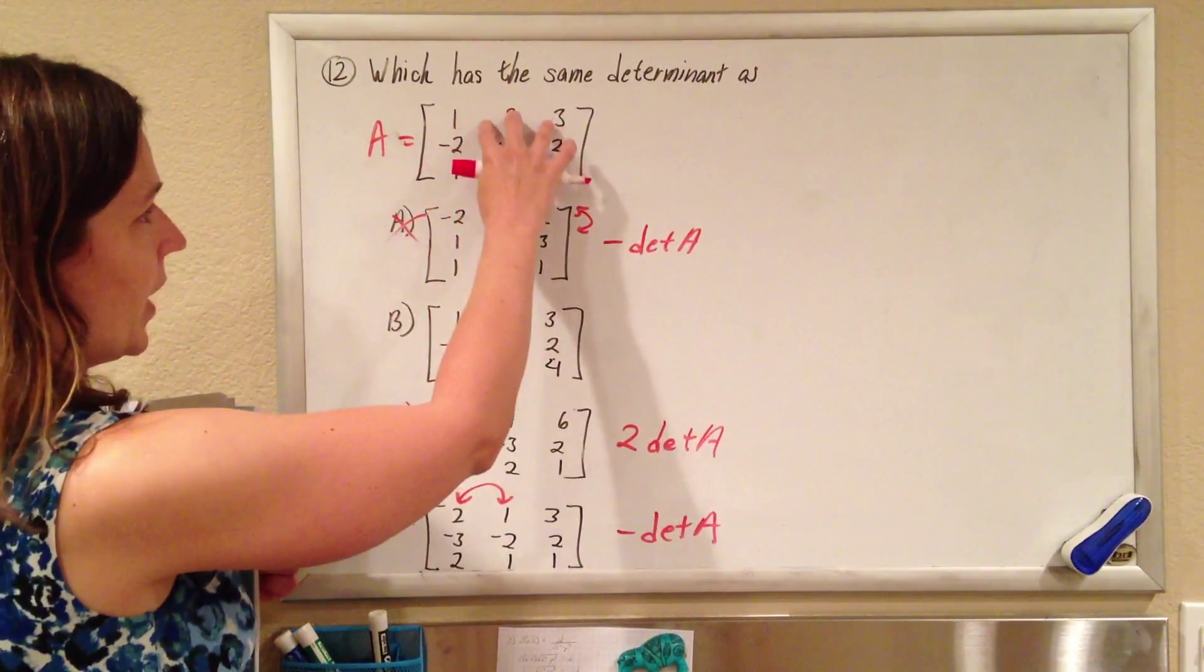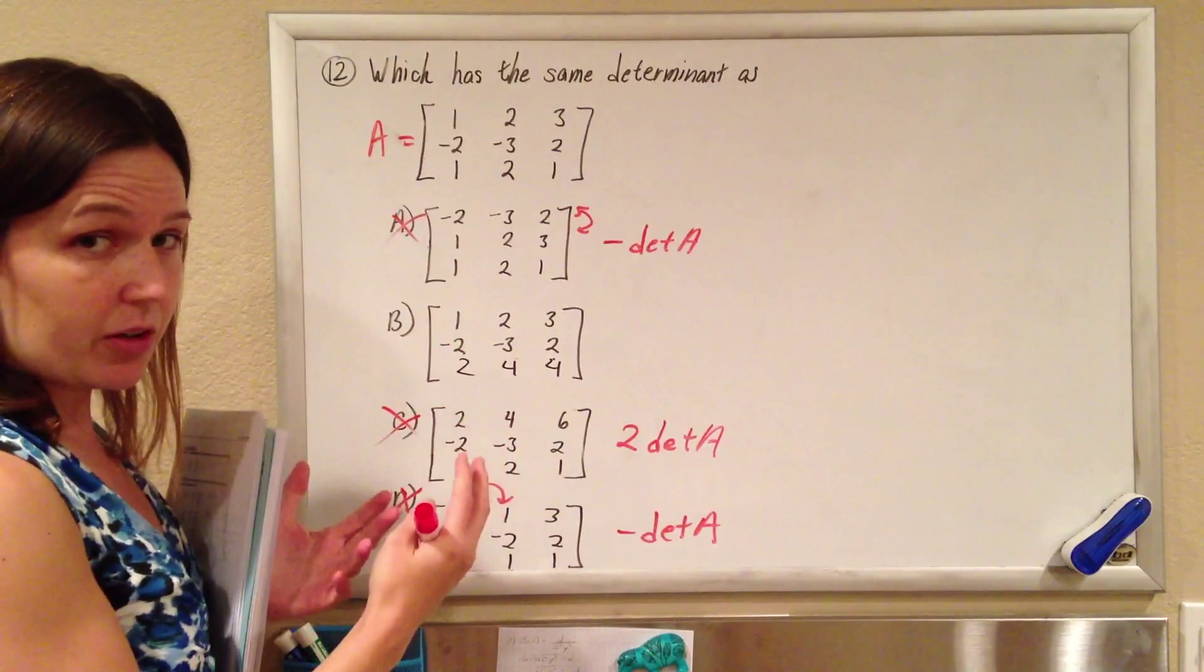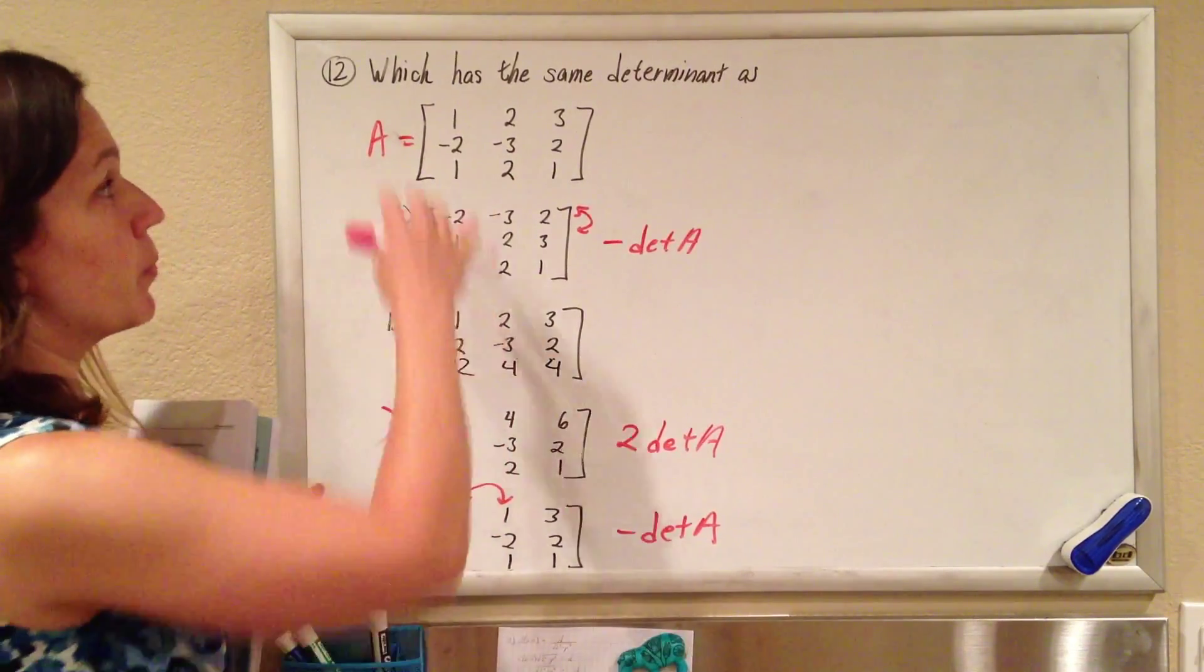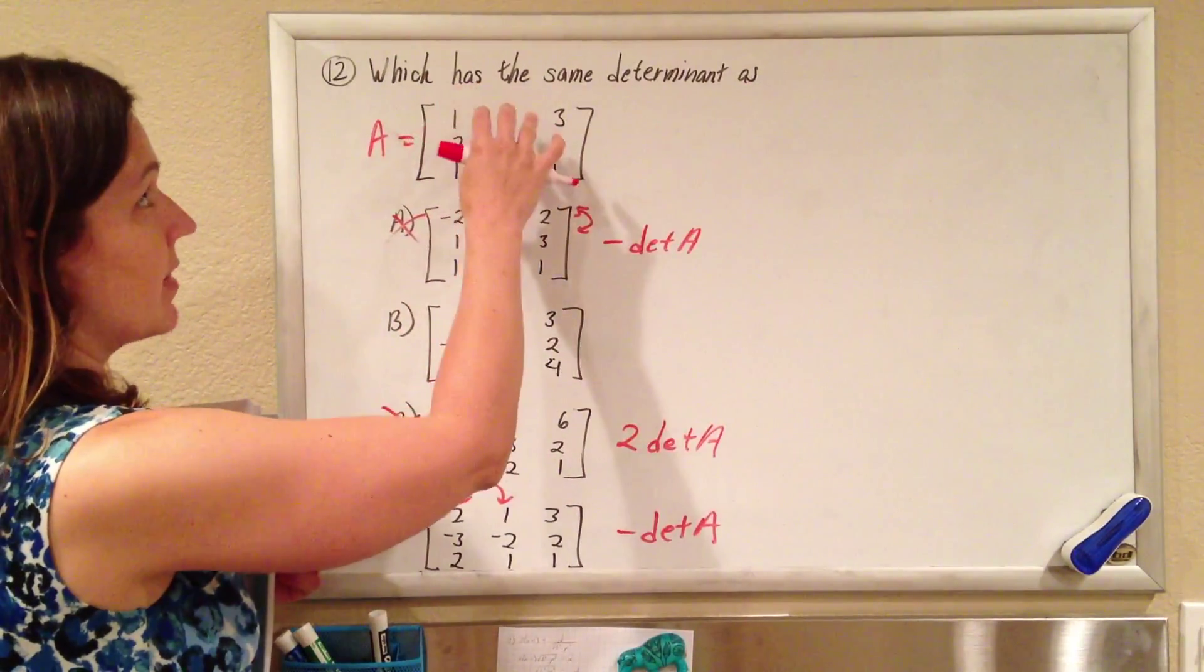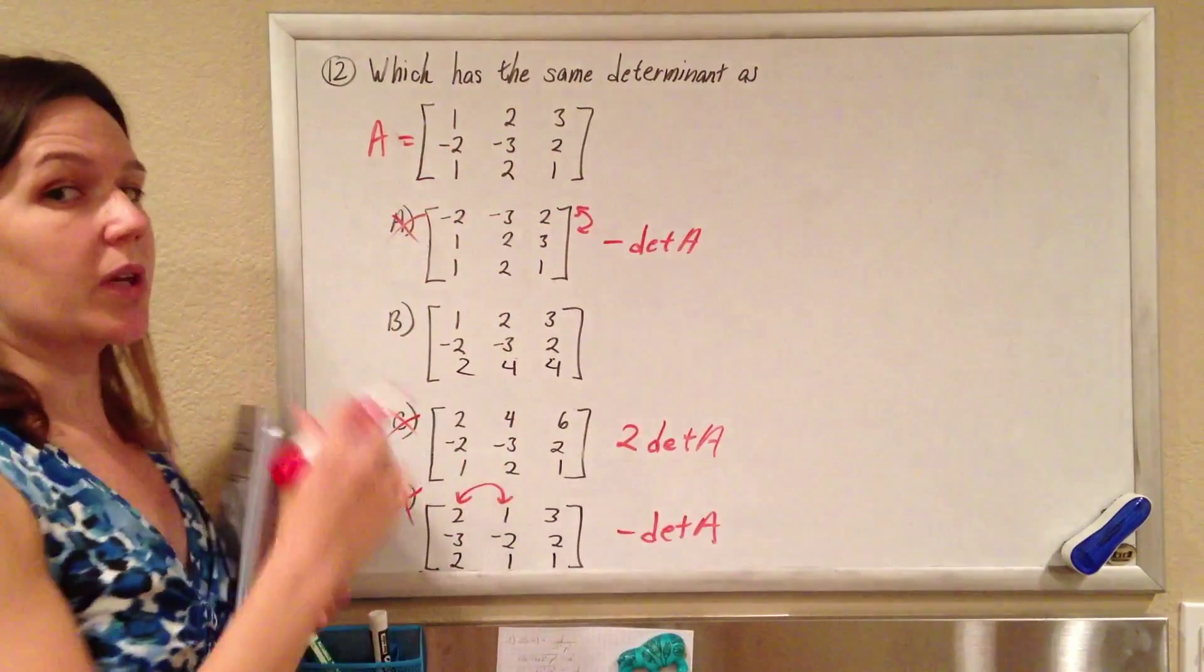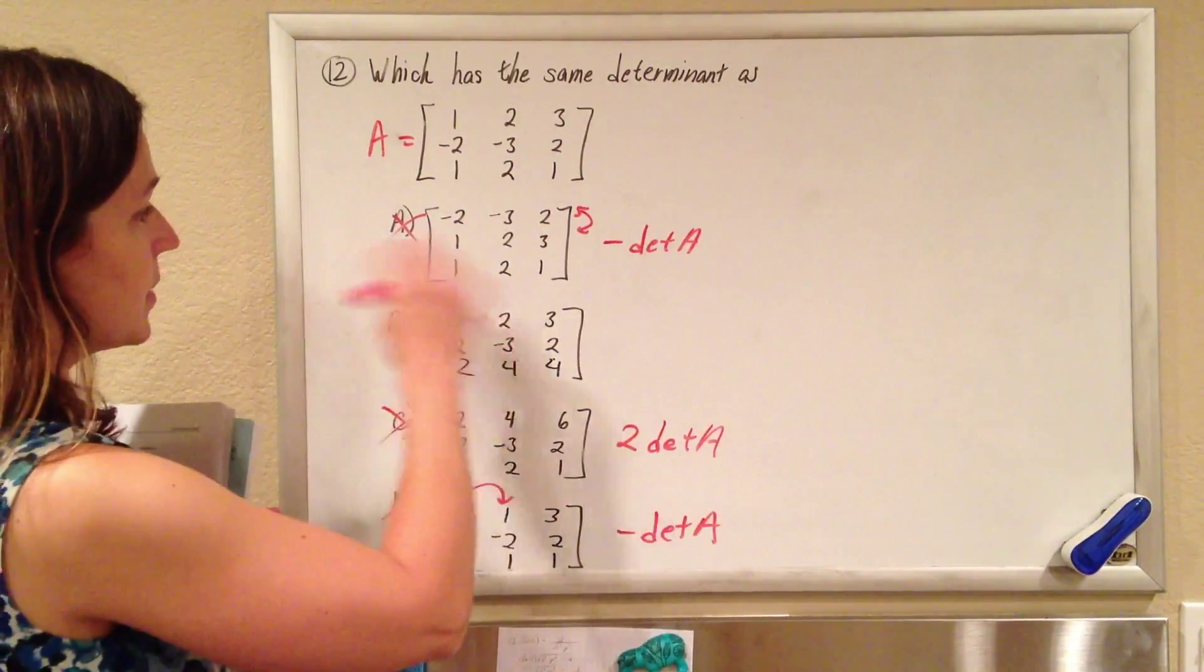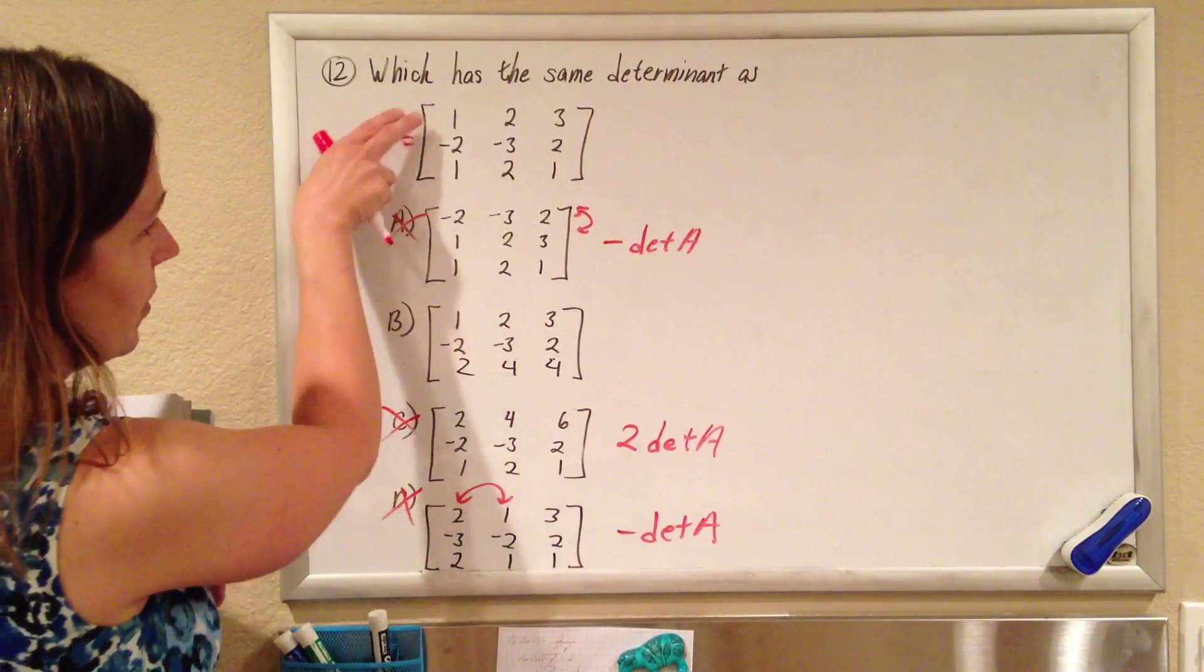But what they want us to see is elementary row operations will not change the determinant of the matrix. So if you multiply one row by another and add them together, multiply one row by a constant and add that row to another row, you will not change the determinant. In this case, they didn't bother with any multipliers and it was still hard to see.